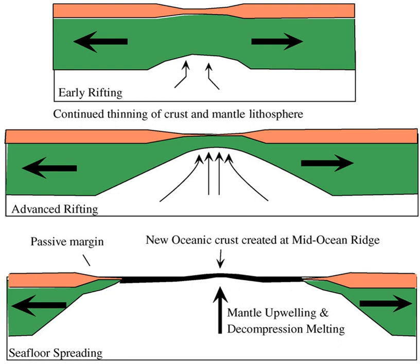A transtensional margin develops where rifting is oblique to the coastline, as is now occurring in the Gulf of California.